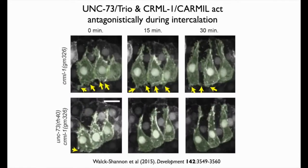In actual images, a CARMIL-1 mutant shows yellow arrows pointing to actin extensions in inappropriate locations — being extended on the basal or backsides of cells. Loss of CARMIL-1 leads to excess small protrusions all the way around the cell periphery. Introducing a TRIO/UNC-73 GEF-1 mutation into this background then rescues these effects, with protrusive activity looking pretty normal in the double mutant. So TRIO and CARMIL act antagonistically during intercalation.